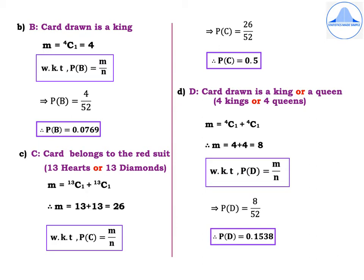Subdivision C: card belongs to the red suit. There are two red suits — hearts and diamonds — each with 13 cards. So m = 13C1 + 13C1 = 13 + 13 = 26. Remember that 'or' means plus. Therefore P(C) = 26/52 = 0.5.